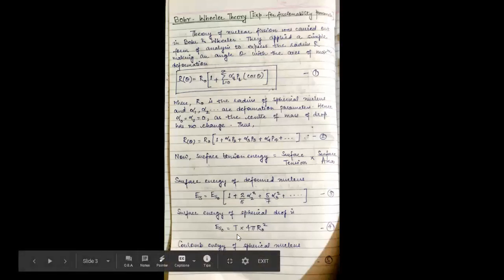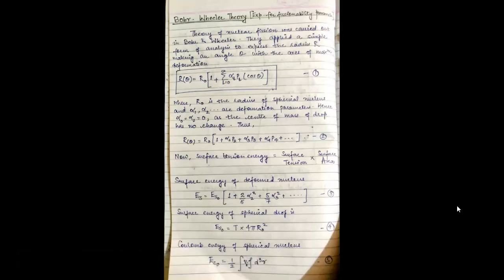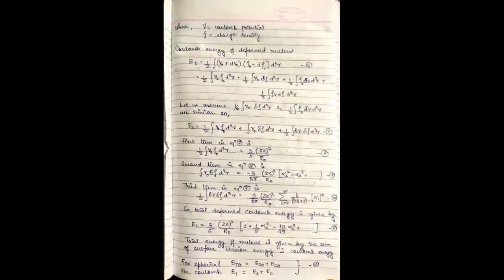The Coulomb energy of the spherical nucleus is EC0 equals 1 by 2 integral V rho d cube R, where capital V is the Coulomb potential and rho is the charge density.